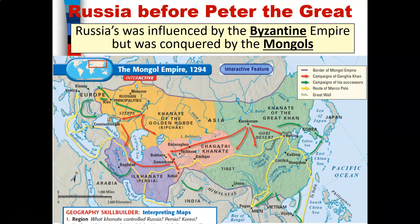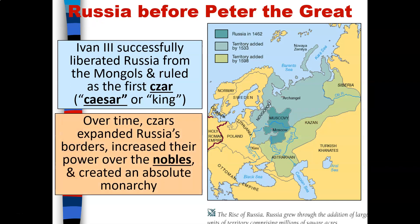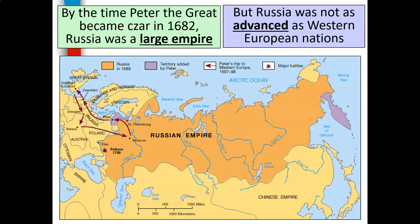Here we have an image of Peter the Great of Russia. Russia before Peter the Great was influenced by the Byzantine Empire but was conquered by the Mongols. Here you also have a color-coded map showing how Russia looked around 1294. Ivan the Third successfully liberated Russia from the Mongols and ruled as the first czar — or caesar, or king.